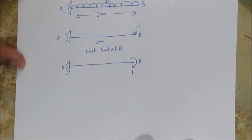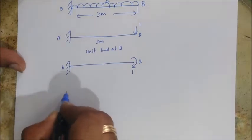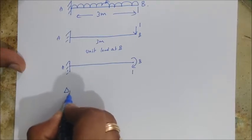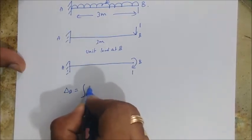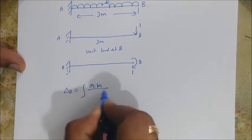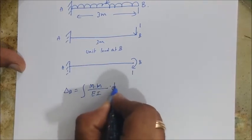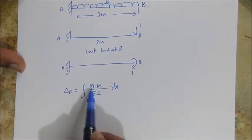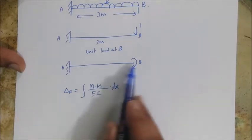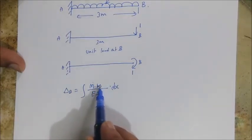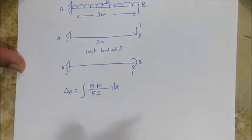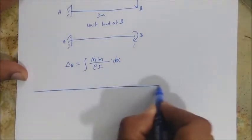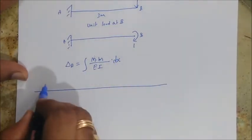As per unit load method, deflection or the slope will be given by Delta B equals integration M times M1 divided by EI into dx. M indicates the bending moment in the beam due to the applied load. Small M is the bending moment in the beam due to the unit load. So let's solve in a table form. I'll write the equations now, we can write a table form.